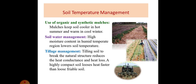Now we will discuss soil temperature management. Use of organic and synthetic mulches: Mulches keep soil cooler in hot summer and warm in cool winter. Soil water management: High moisture content in humid temperate region lowers soil temperature. And tillage management: Tilling soil to break the natural structure reduces the heat conductance and heat loss. Highly compact soil loses heat faster than loose, friable soil.